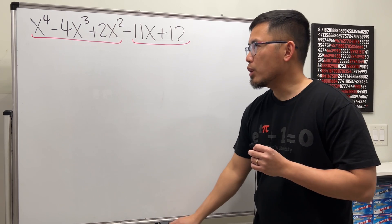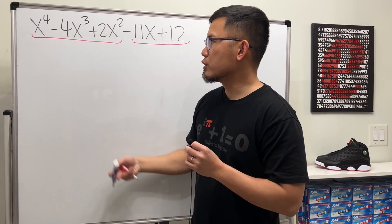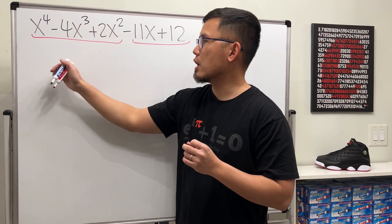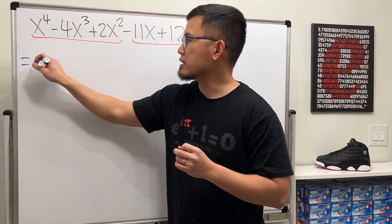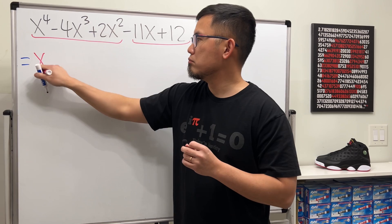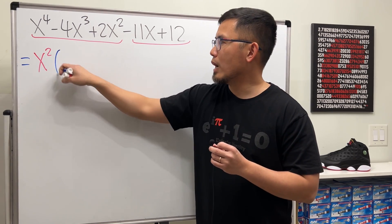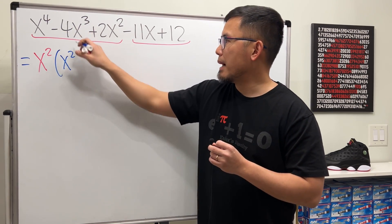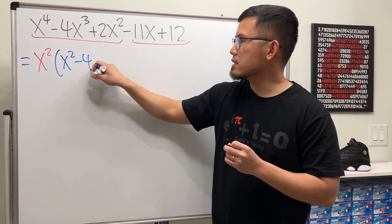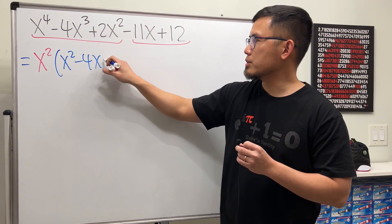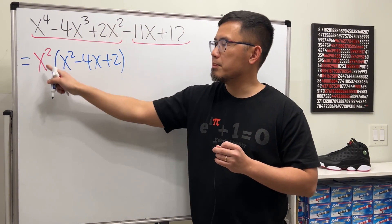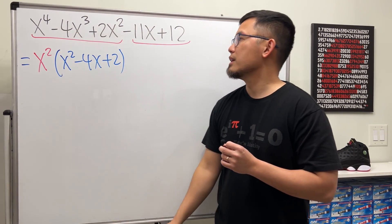Right here, for the first three terms, let's go ahead and just factor out x to the second power. That is doable. And then we will have x squared minus 4x plus 2. Just divide everybody by x squared.